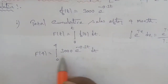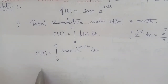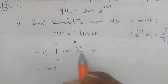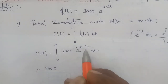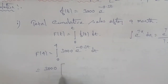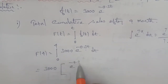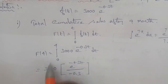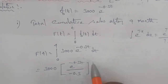The constant value is 3000, so take it outside. Now integrate e^(-0.3t) dt. The same concept applies: for integral of e^(ax) dx, the result is e^(ax)/a. So here the result is 3000 times e^(-0.3t) divided by (-0.3), with limit 0 to 4.